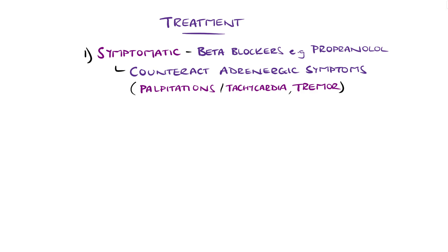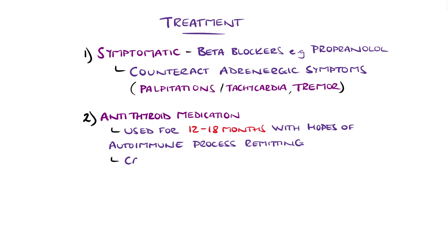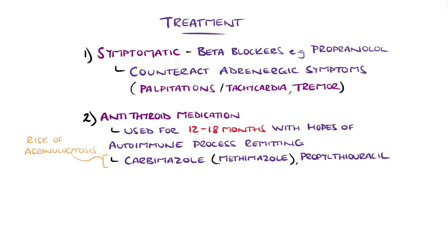Hyperthyroidism can be treated with antithyroid medication, radioactive iodine, or surgery, with different options being used in different situations. Antithyroid medications are used over a longer period of 12 to 18 months to control the hyperthyroidism, with an expectation that the autoimmune process will remit over this period. Examples include carbimazole or its main metabolite methimazole, and another is propylthiouracil. A side effect to be aware of is agranulocytosis, meaning a low level of white blood cells, particularly lymphocytes and monocytes.